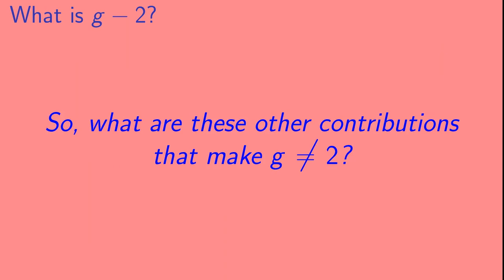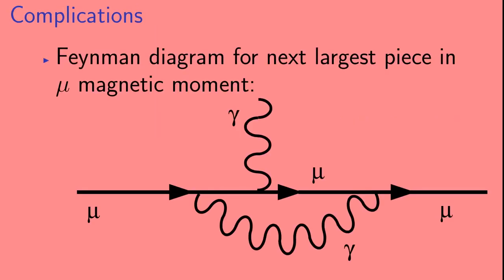So what are these other contributions that make G not equal to 2? Here's the Feynman diagram for the next largest piece in the muon magnetic moment. Just like the diagram we saw before, it has a muon emitting or absorbing a photon gamma. But this time, there's also a second photon that is emitted and reabsorbed by the muon.